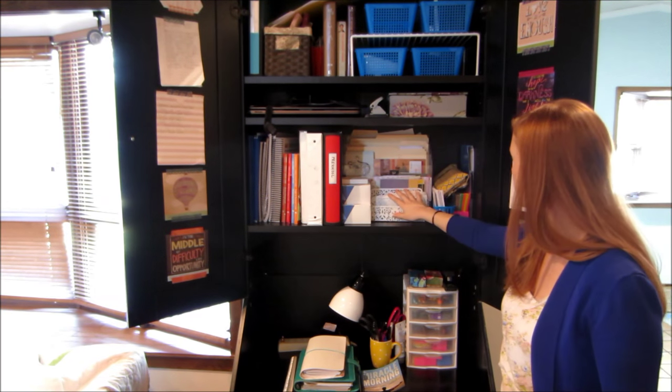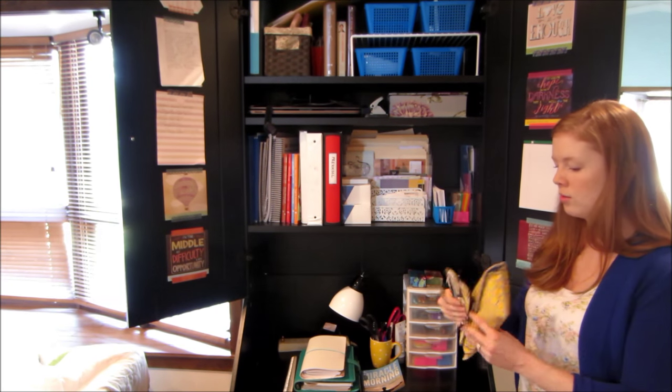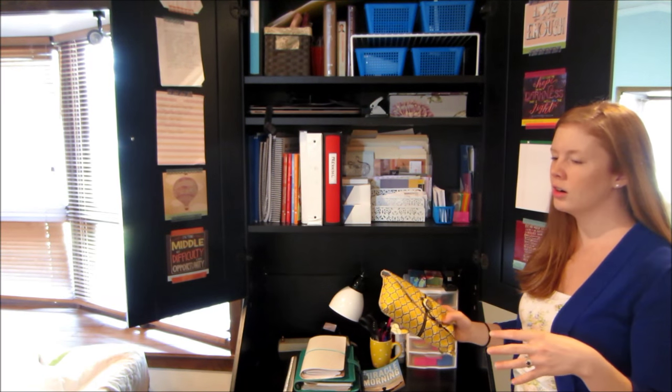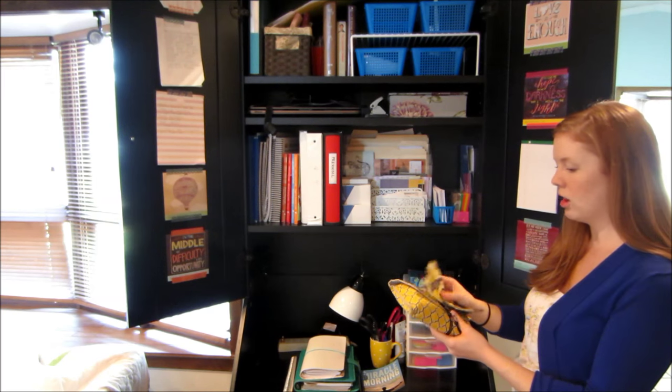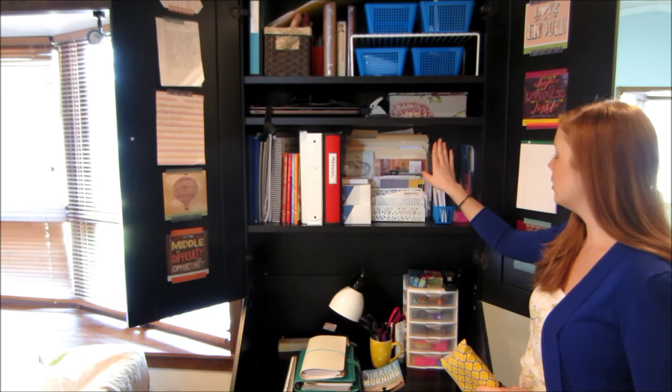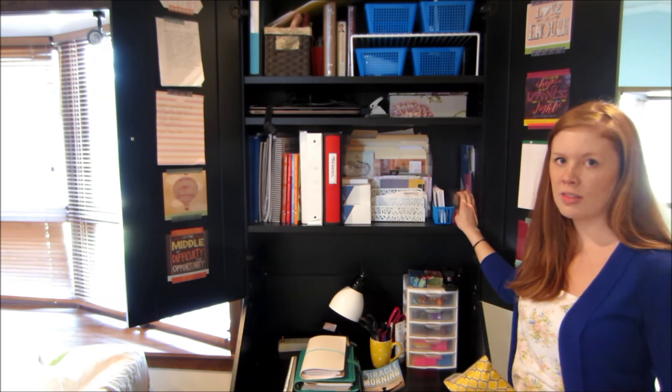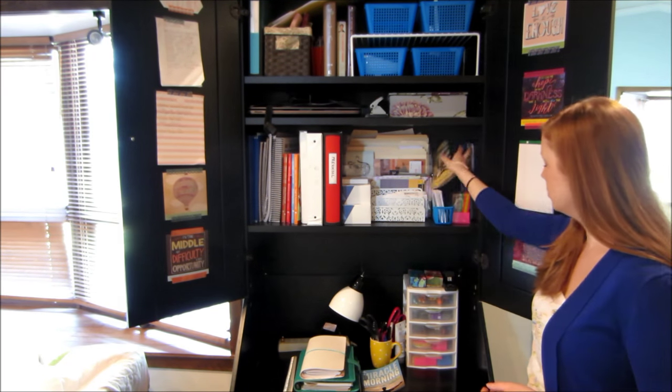Over on this side we have our envelope system envelopes. We follow Dave Ramsey, we haven't been doing that too much, we're trying to figure out how to do our expenses now with the daycare but those are here. I got these on an Etsy shop, I love them. And then I have envelopes, stamps, little greeting cards like if I want to send a thank you out or something like that, and then checks.